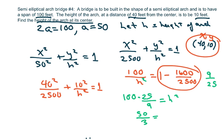Wait, let me correct this. We have 9h² = 2500. Then you divide by 9 and take the square root, which gives approximately 16.67 feet. So the height of the arch at its center is 16.67 feet.